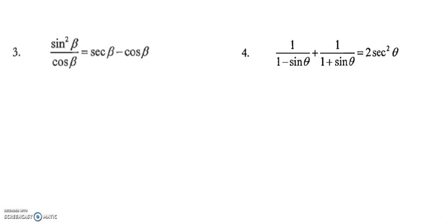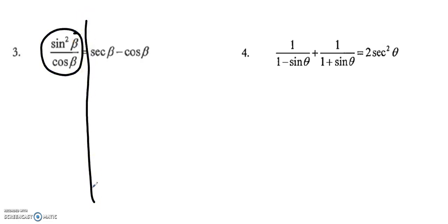For the next ones, it's harder to tell which side is more complicated. The way I like to think about it: I have one term on one side with no addition or subtraction, and two terms on the other. So I'm either going to need to split the single term into two, or combine the two terms into one. It doesn't matter which you decide — you'll find certain methods work better for you. On this one I'll start with the two-term side and try to combine them.